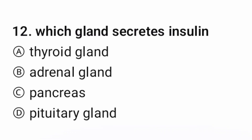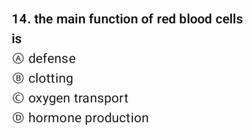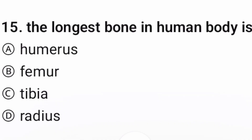Question 12: Which gland secretes insulin? The correct option is C, pancreas. Question 13: The average blood volume in an adult human is — the correct option is C, five liters. Question 14: The main function of red blood cells is — the correct option is C. Question 15: The longest bone in the human body is — the correct option is B.